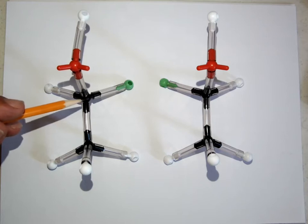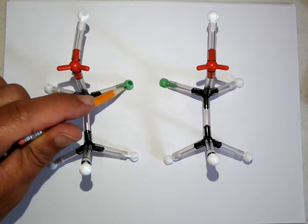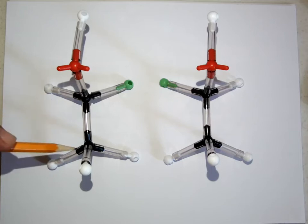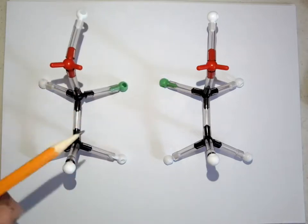This carbon here, the number one carbon, has an OH group, a chlorine, a hydrogen, and a methyl group. And this molecule has two different isomers that are not identical.